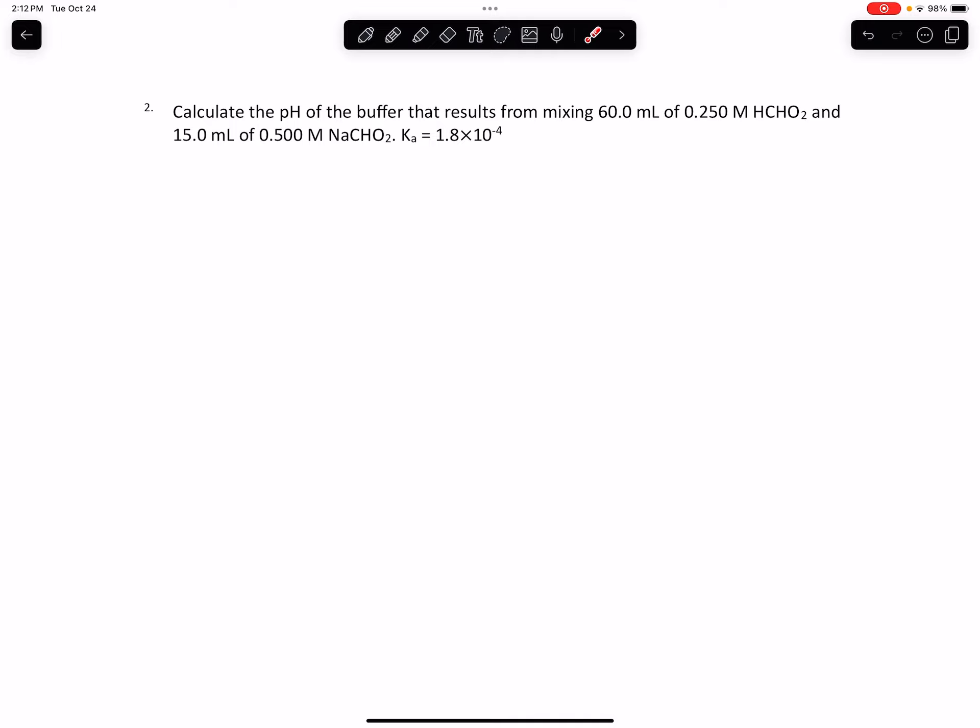What's interesting is that Ka is given, but we have different amounts. The volume and concentration are different for the acid and the base. When we mix the two solutions together, the net volume changes - 60 mL plus 15 mL makes 75 mL total. Since we're calculating the pH of the buffer, we need to take that into consideration.